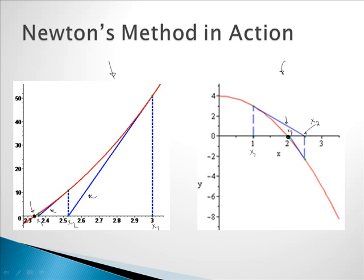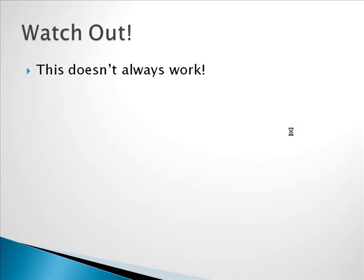Just to recap: what we're doing is starting at the value x1, finding the tangent line to the curve at x1, and wherever that tangent line intersects the x-axis that becomes x2, and we continue this process. Now, a word of caution — this doesn't always work, so watch out.